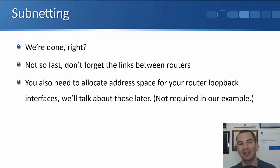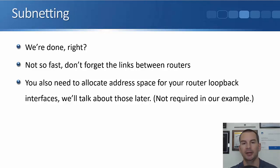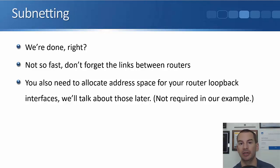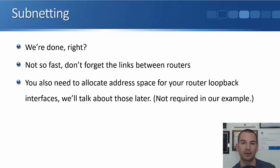Remember, we also have to allocate addresses for the point-to-point link between the routers in Boston and New York. Another thing you would do in the real world is also allocate address space for your loopback addresses. Loopback addresses are used for management — they're a logical address, so there's not anything physical on the other end. We'll usually allocate a slash 32 to loopback addresses, but we'll talk about those more in later lectures.